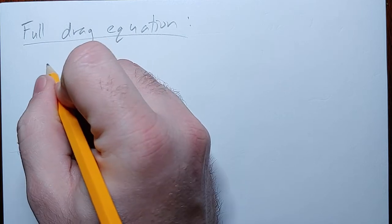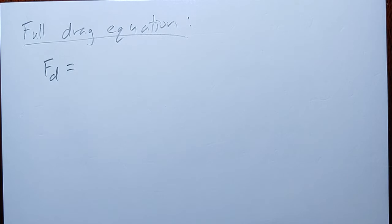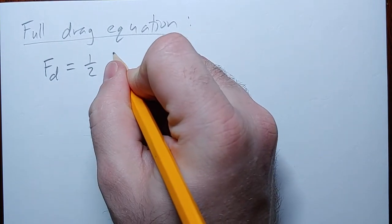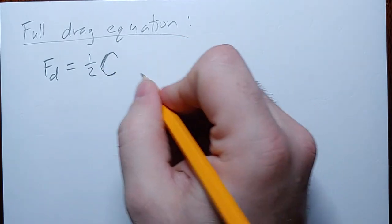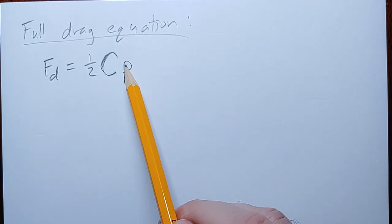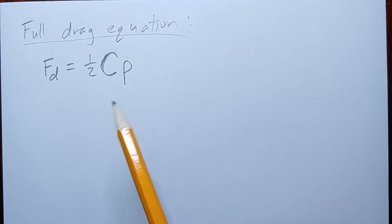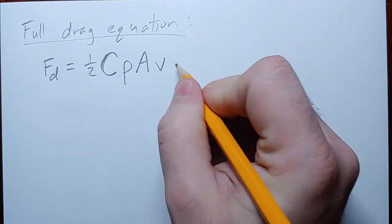This applies to the drag force from any fluid, not just air. The drag force F_D is equal to one half times a constant C, times rho — a Greek letter that looks sort of like P but with a single loop — times A, times V squared.